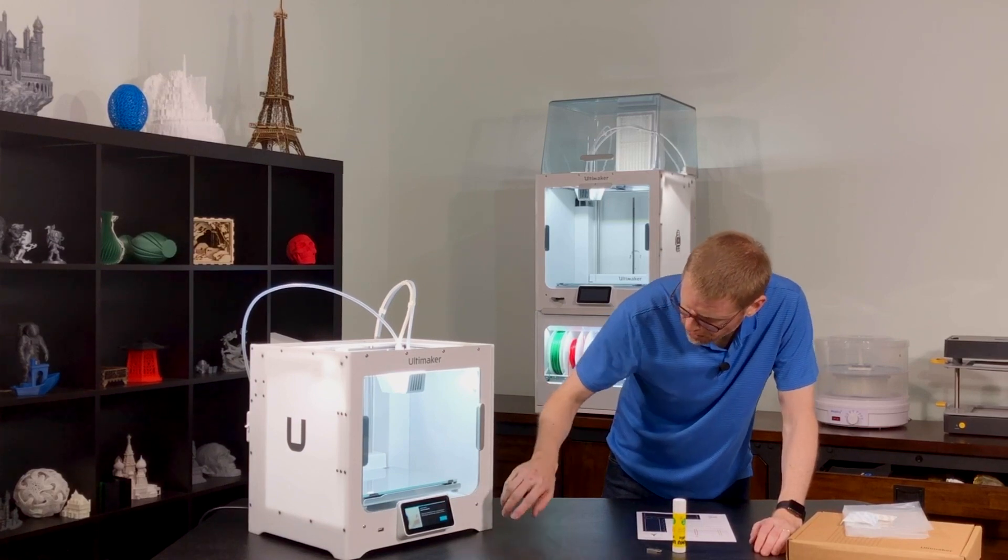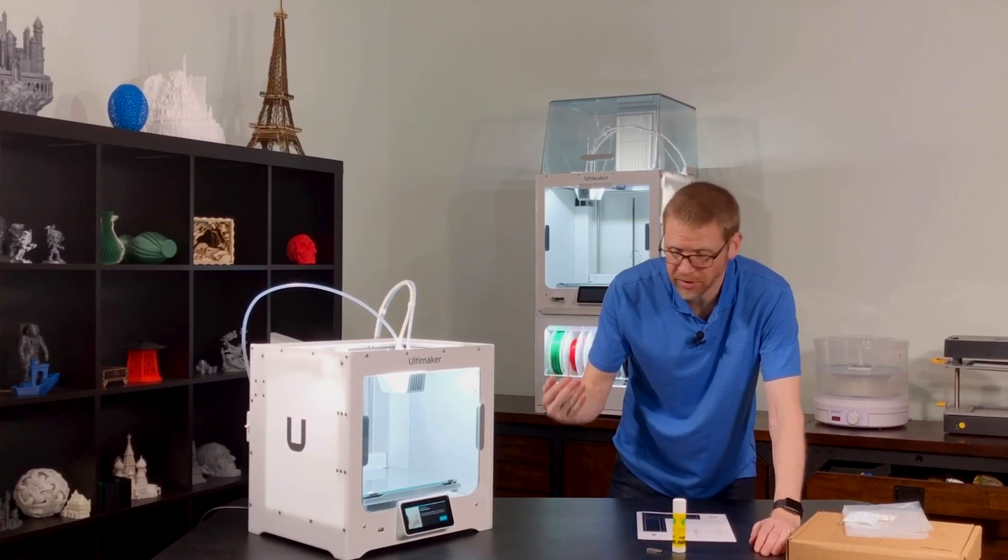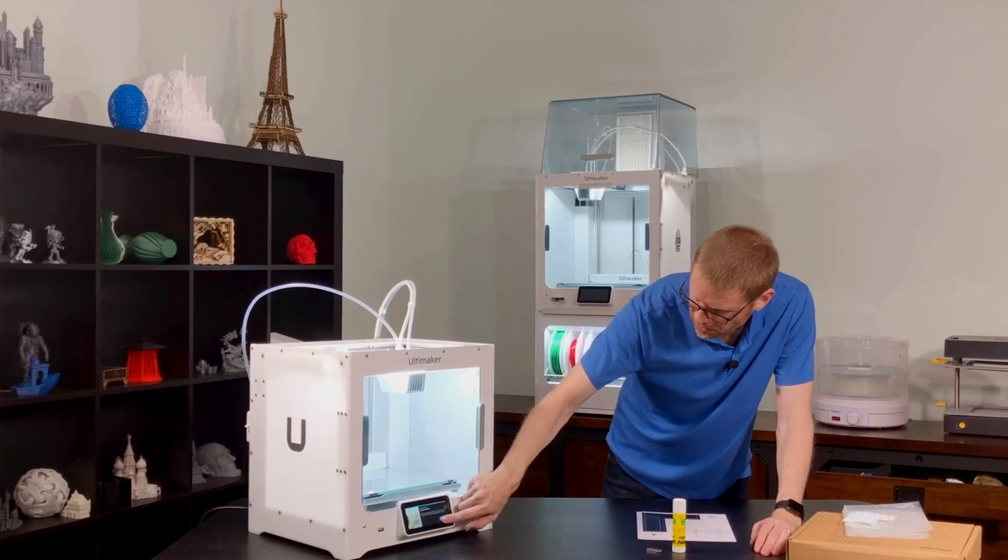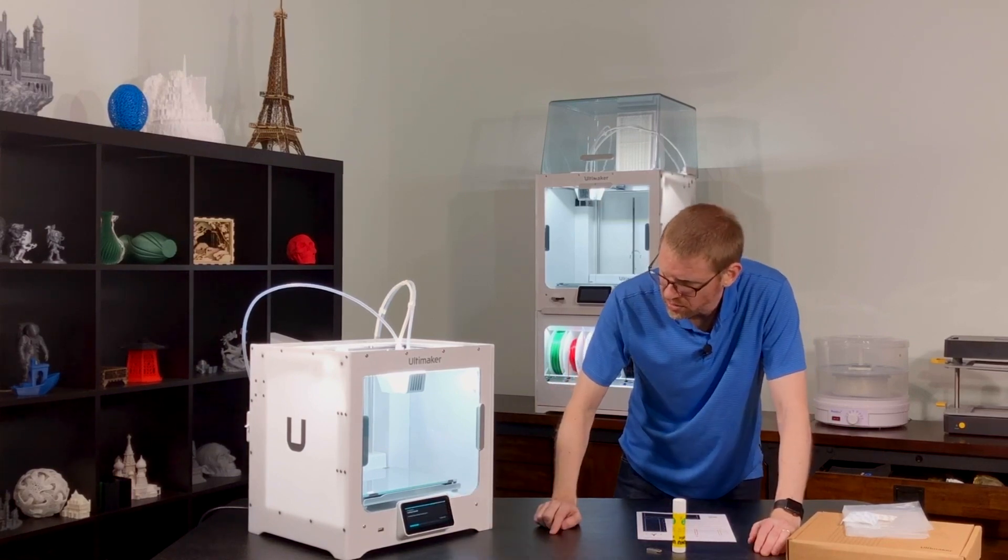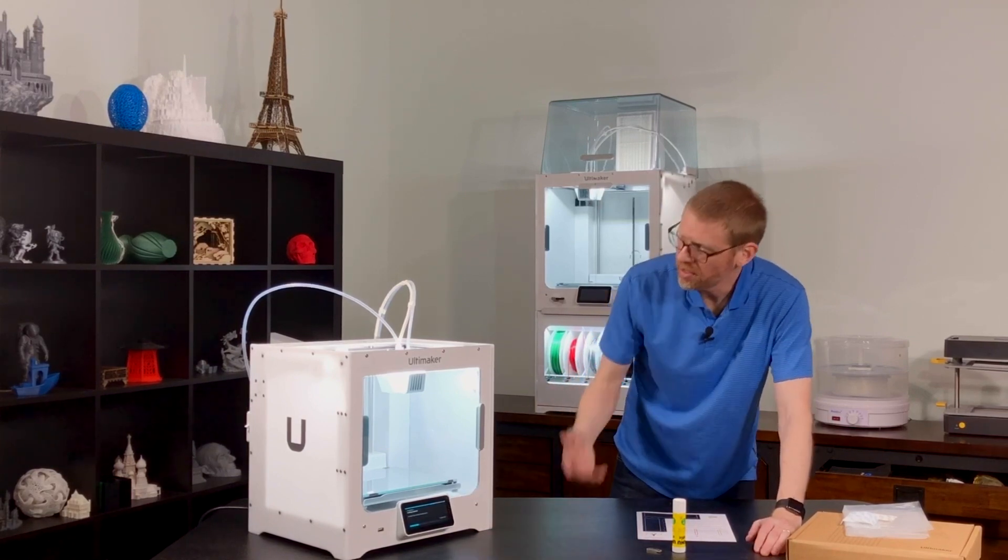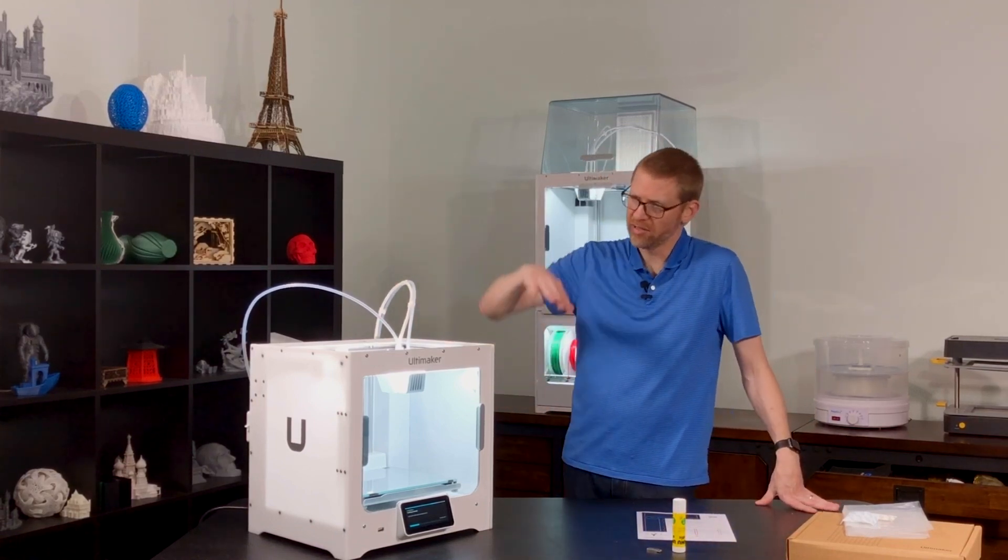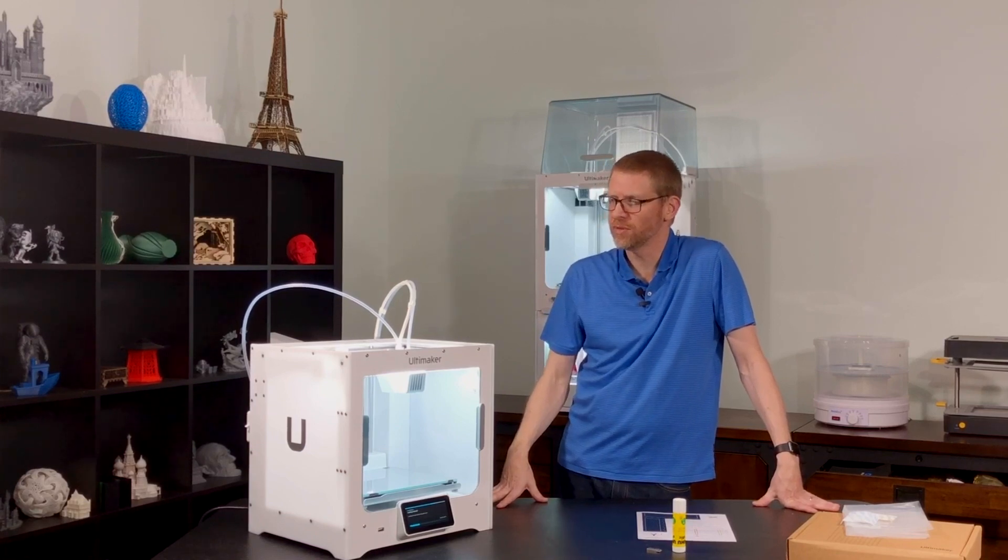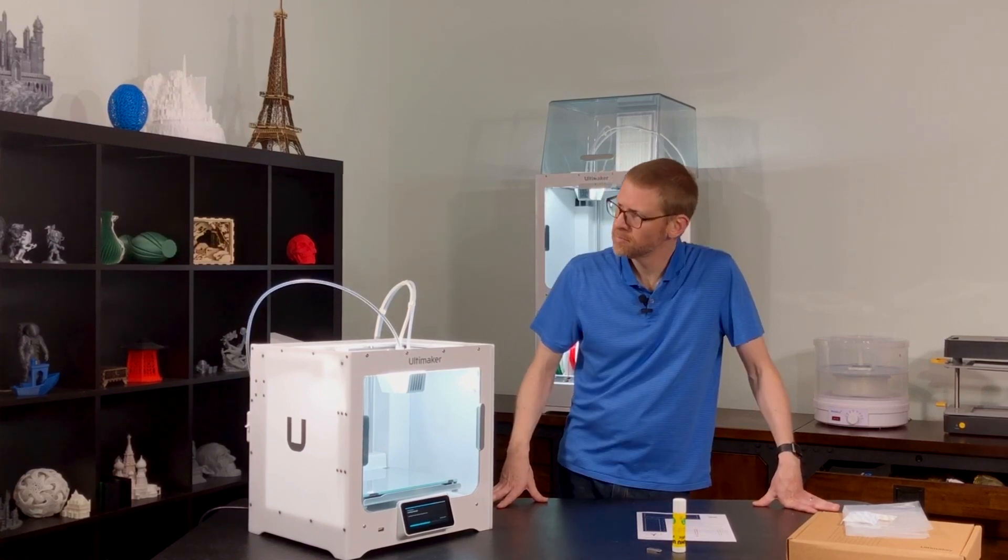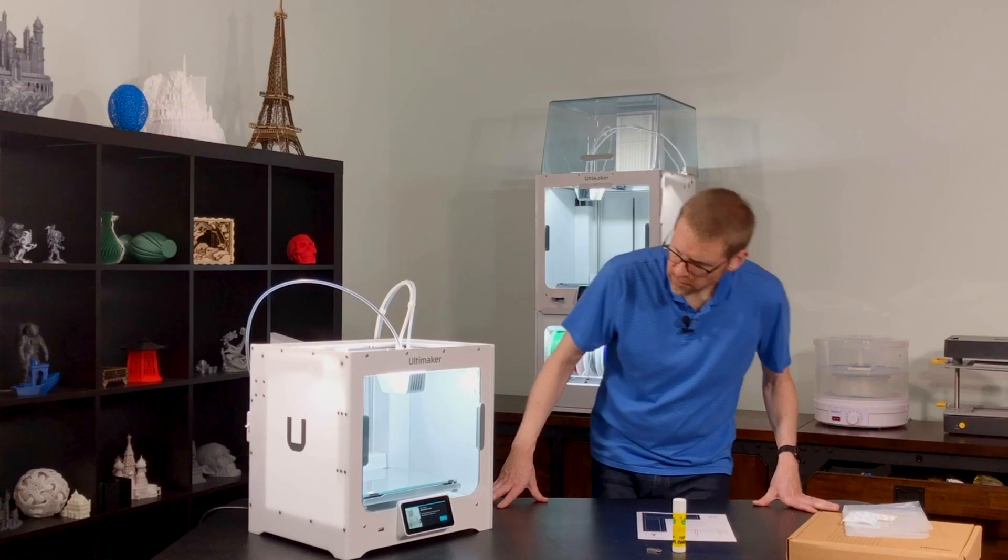Now it says insert the material, which I've already done. At this point, you would feed it into the feeder if you wanted to follow the instructions. But I find this to be a time-saving approach. Now it's loading that material through. So as soon as it heats up the print core, it will move that second material up through into the extruder.